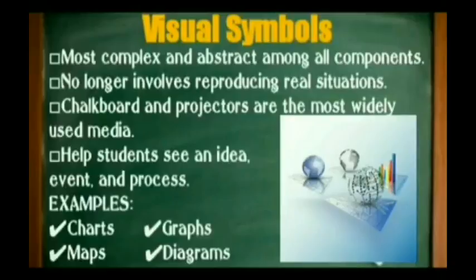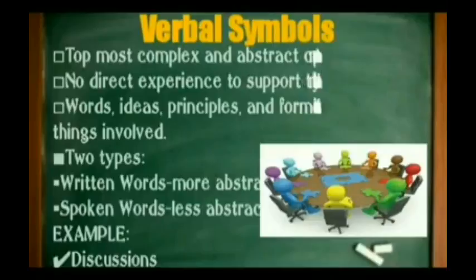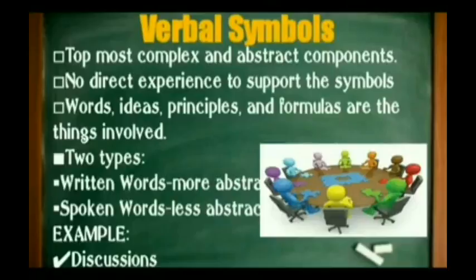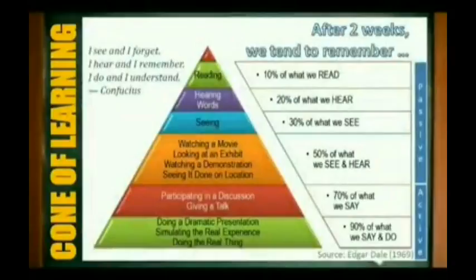The next level is visual symbols — the most complex and abstract among all components of the cone. Charts, maps, graphs, and diagrams are used for abstract representations. The last level is verbal symbols, the topmost and most abstract level. In this level, words, ideas, principles, formulas, and the like are used. This level does not involve visual representation close to their meanings.